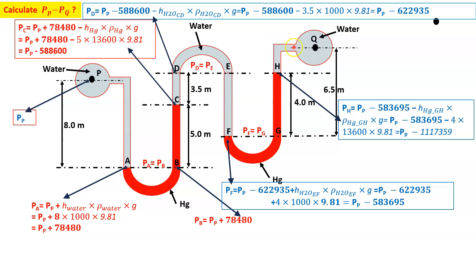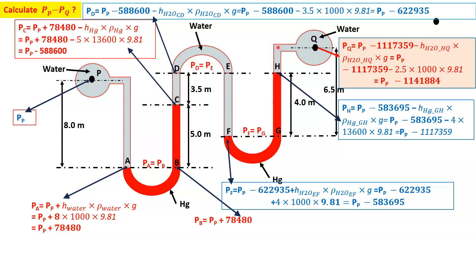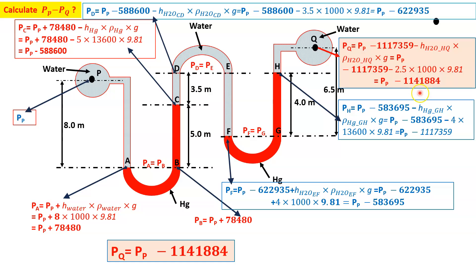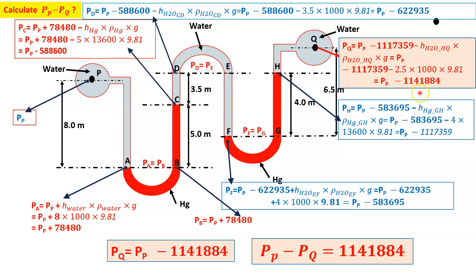Drawing a horizontal line, the pressure at PH equals the pressure at the corresponding point leading to Q. Going upward to Q, pressure decreases: PQ = PP − 1117359 − H_water(HQ) × ρ_water × g. Here H_water is 2.5 m (since total is 6.5 m and 4 m is accounted for), so PQ = PP − 1141884. Therefore, PP − PQ = 1141884 Pascal.